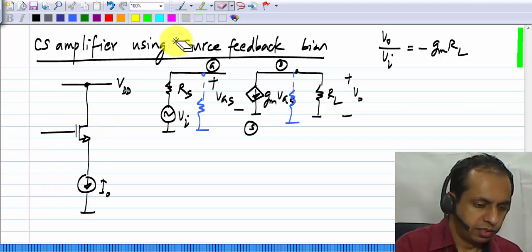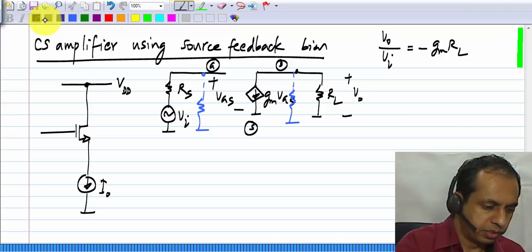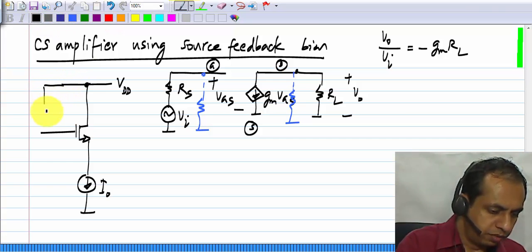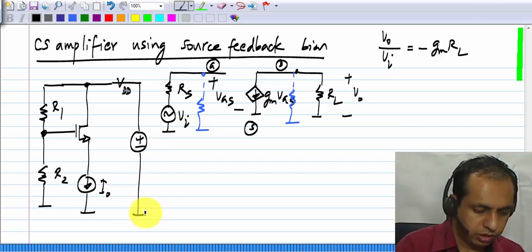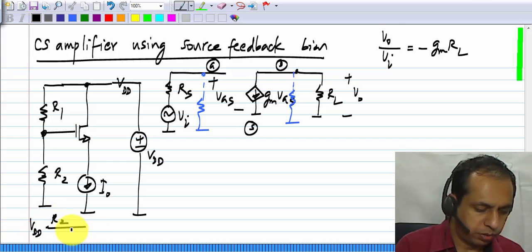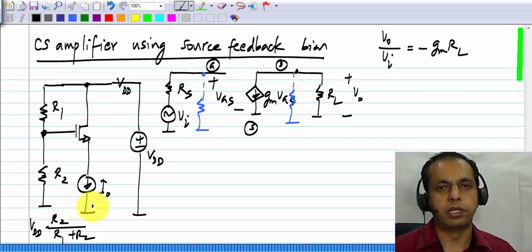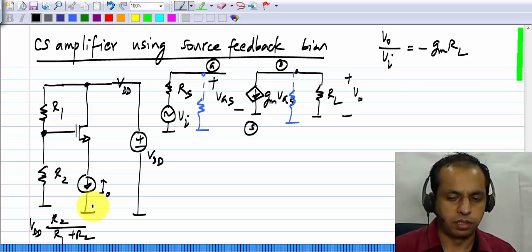First part is very easy, to derive the gate voltage from this main supply voltage Vdd. All I have to do is to use a resistive divider R1 R2, and this is a supply voltage Vdd, and the gate voltage will be Vdd times R2 by R1 plus R2, and we can set this to anything we want by suitably choosing the values of R1 and R2.